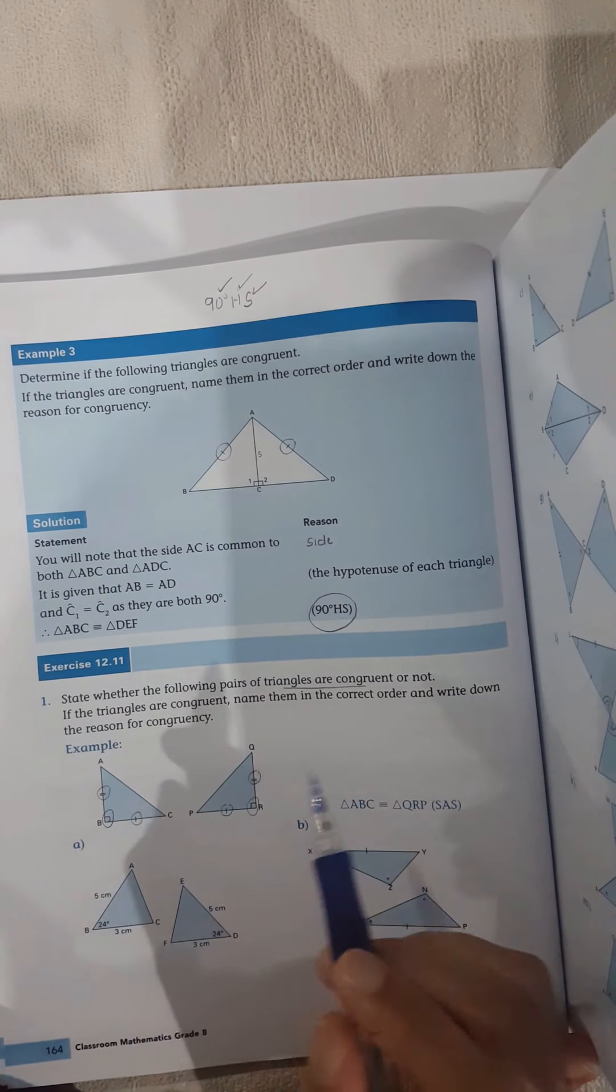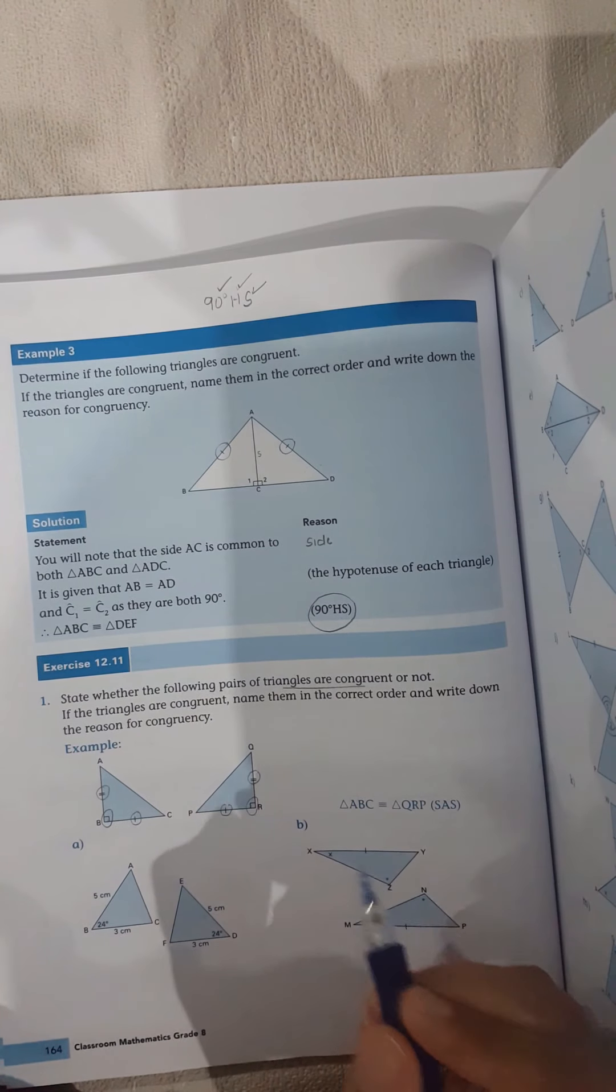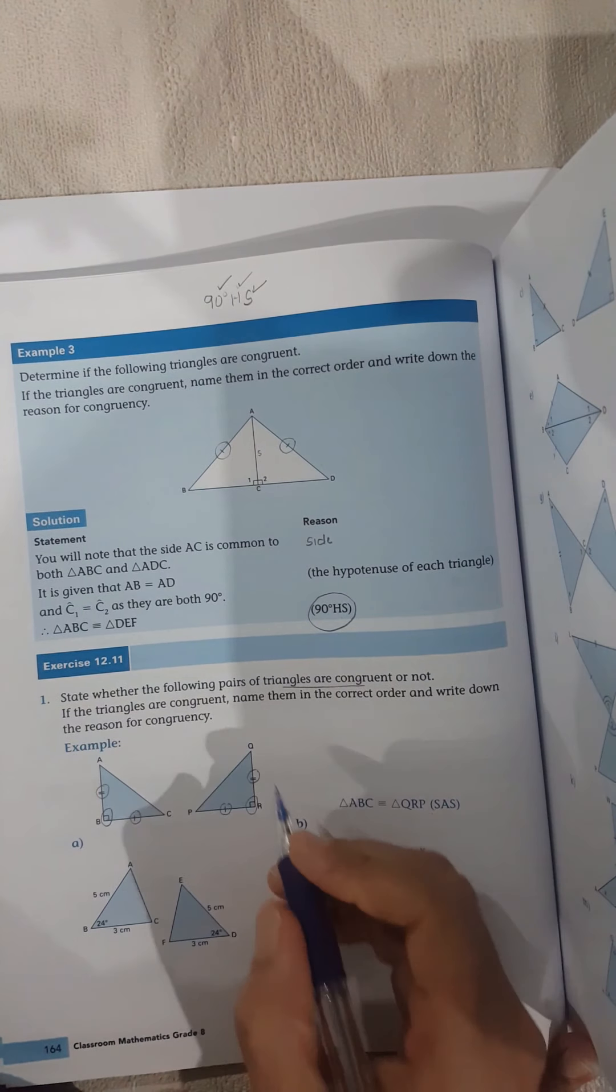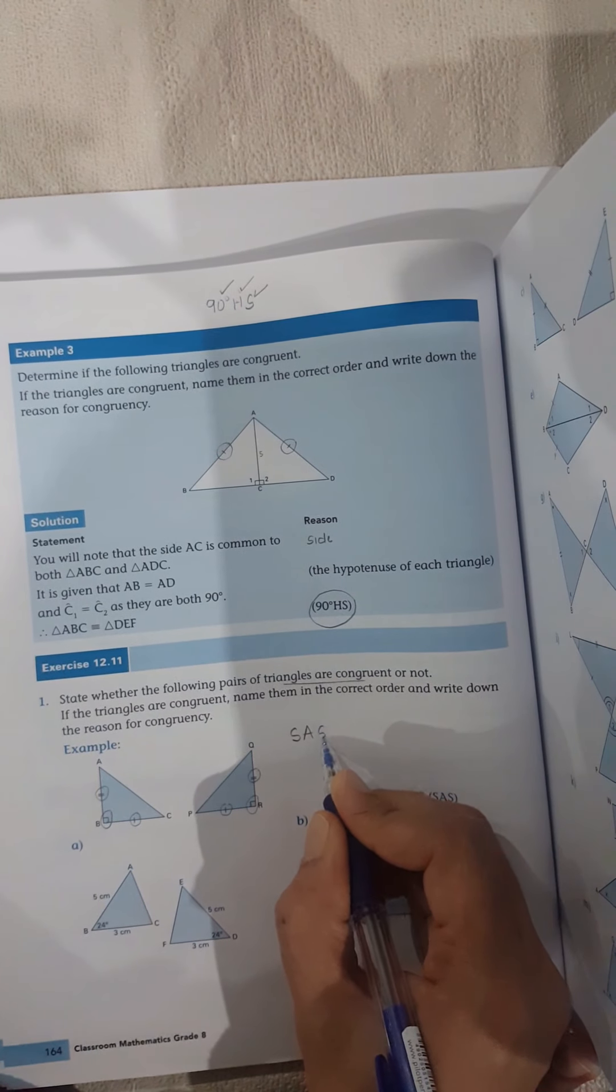Okay. So this one is a bit tricky that you would have went for 90 degrees hypotenuse, but it's not that one. It's side, angle, side. I've got side, angle, side. Okay. If this was the angles that were equal, I wouldn't be able to prove it.